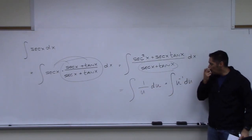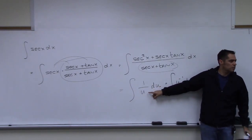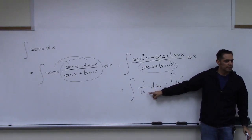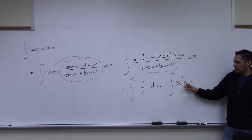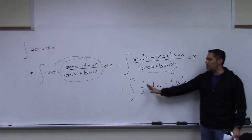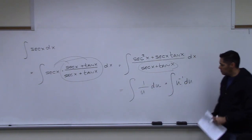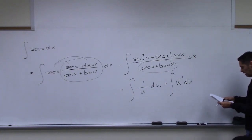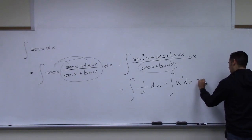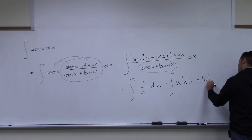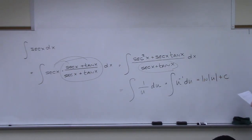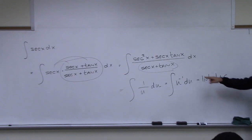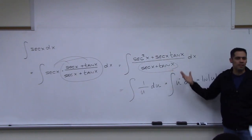From there, we get natural log of the absolute value of u plus C, then replace u with what it was, and you're done.